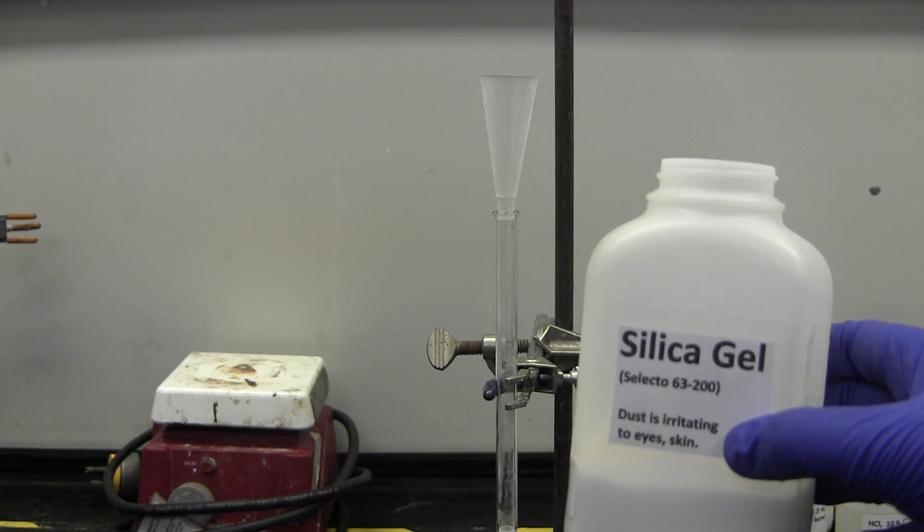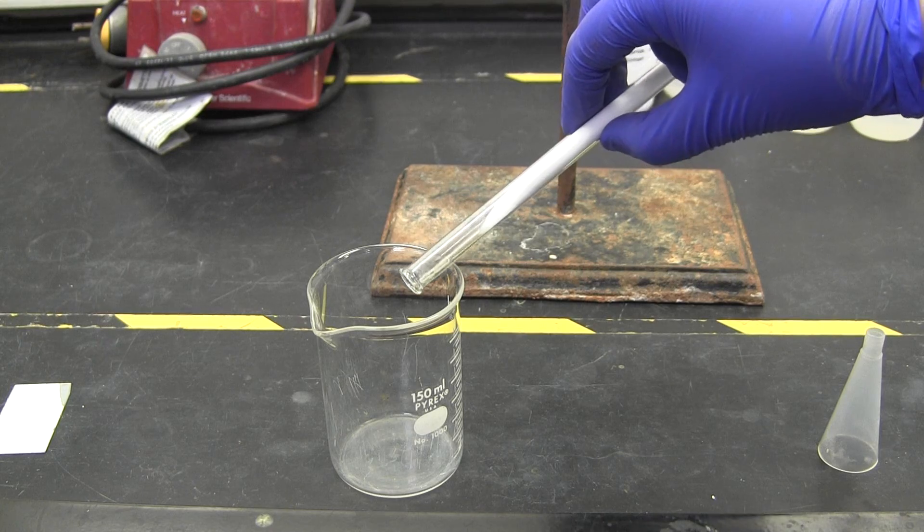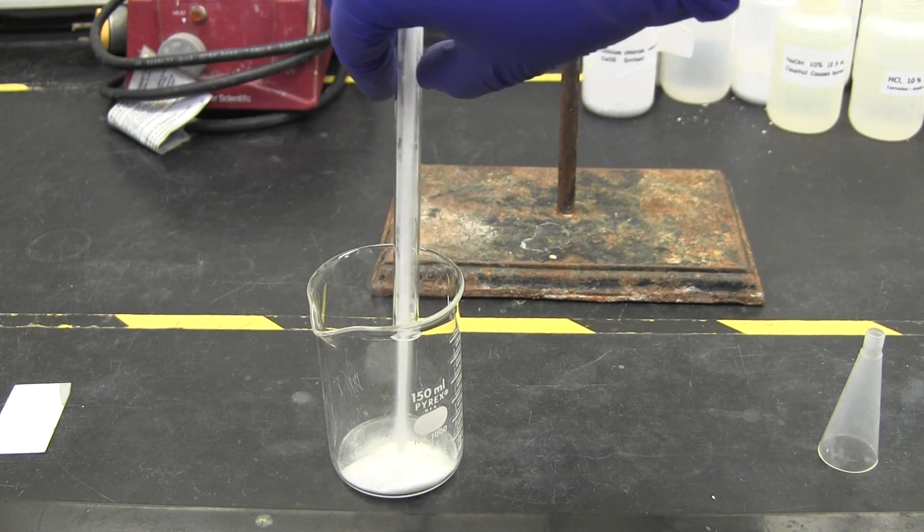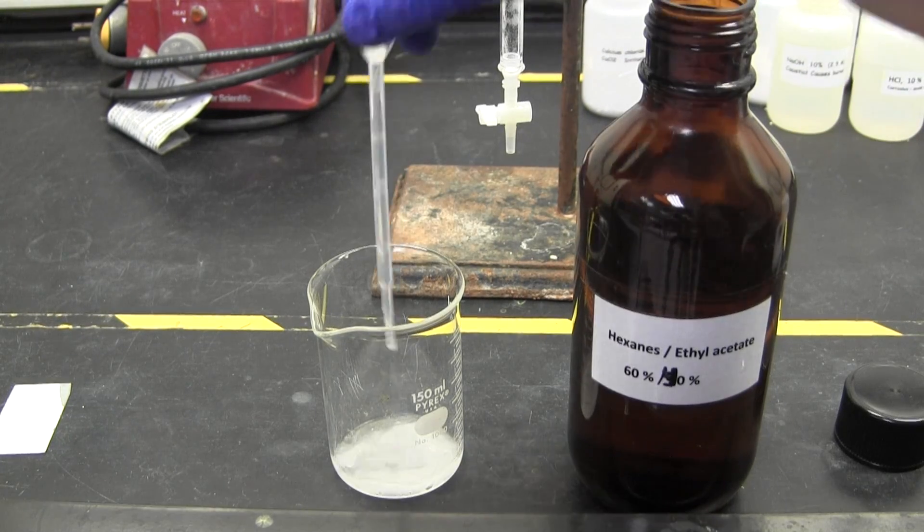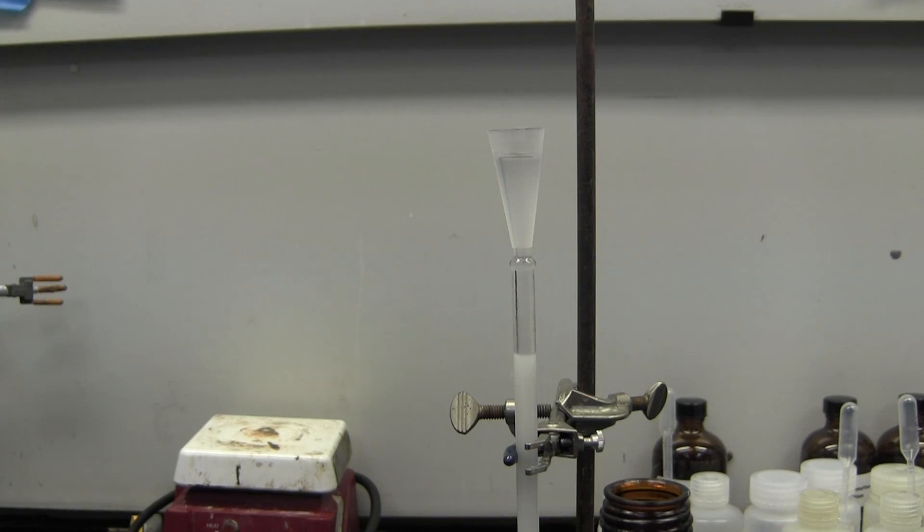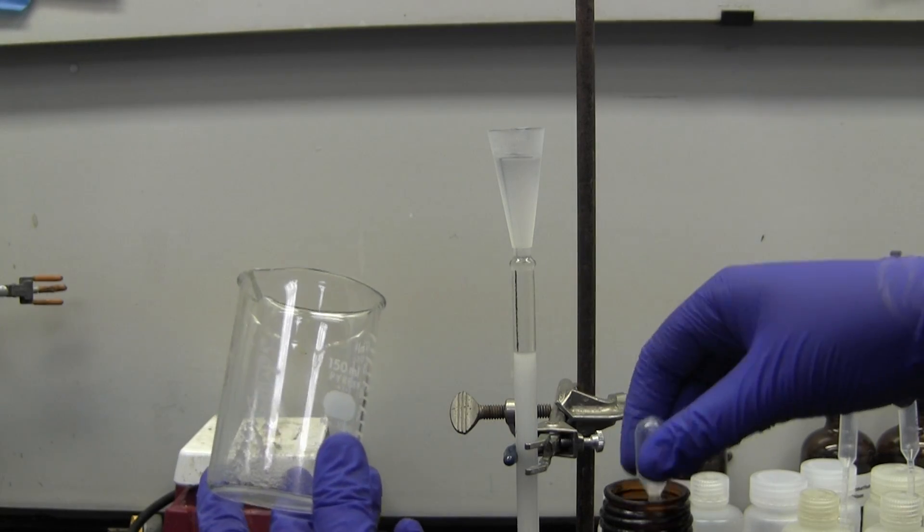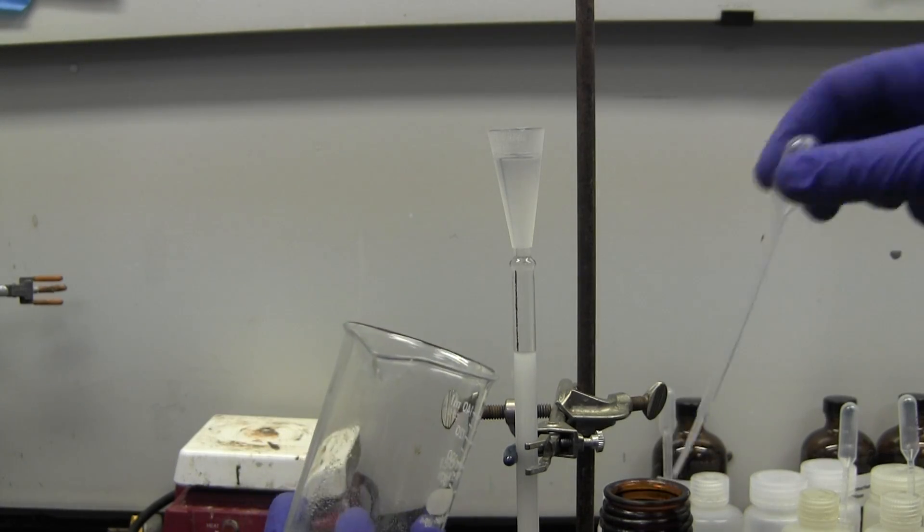Fill the column approximately two-thirds full with dry silica gel powder. Empty this into a beaker and add solvent to make a slushy-like mixture. Pour this mixture back into the column and drain off the solvent without letting the gel be exposed to air. You can use more solvent to rinse the beaker and make sure all of the resin gets into the column. This is called packing a column.